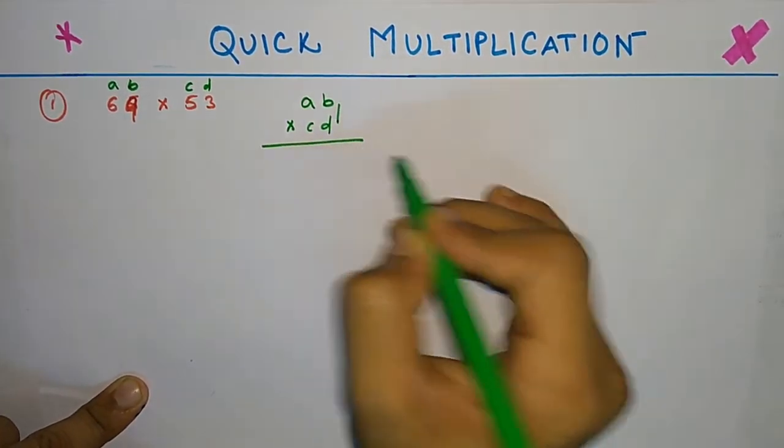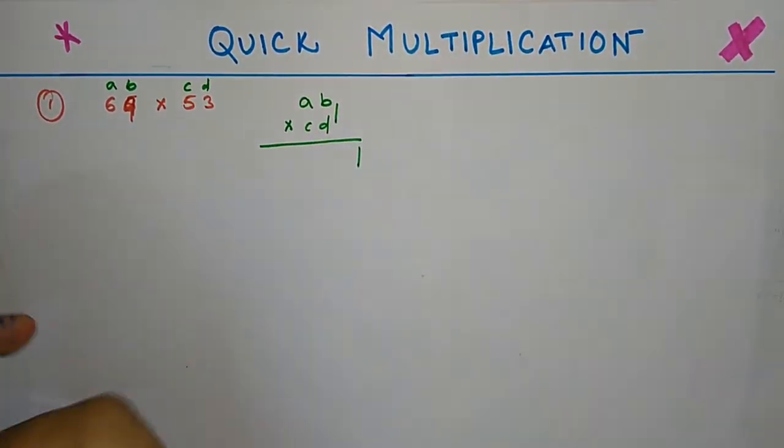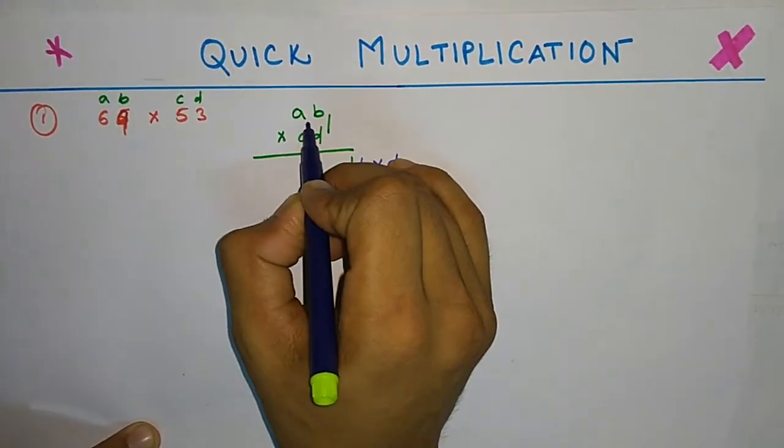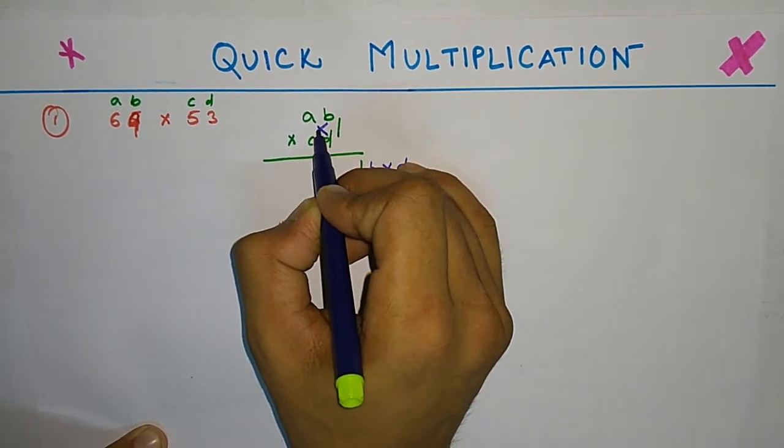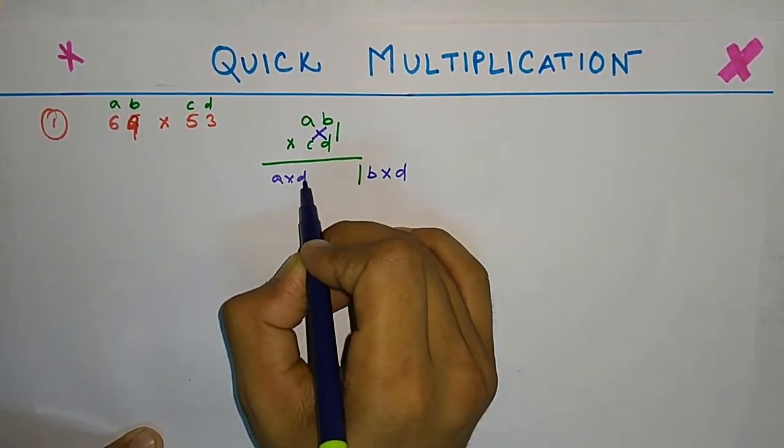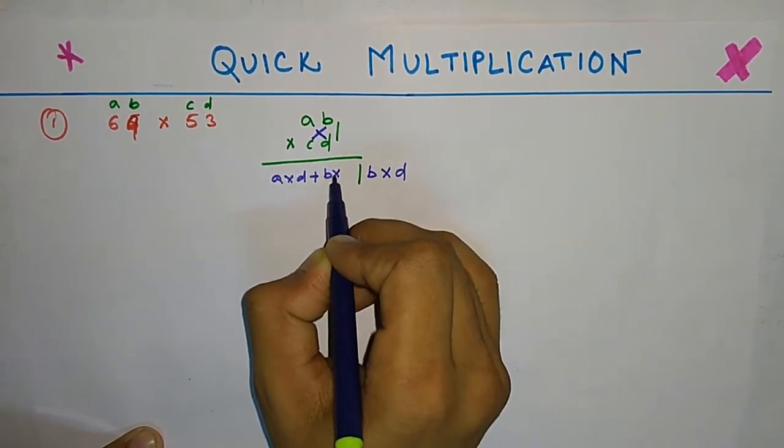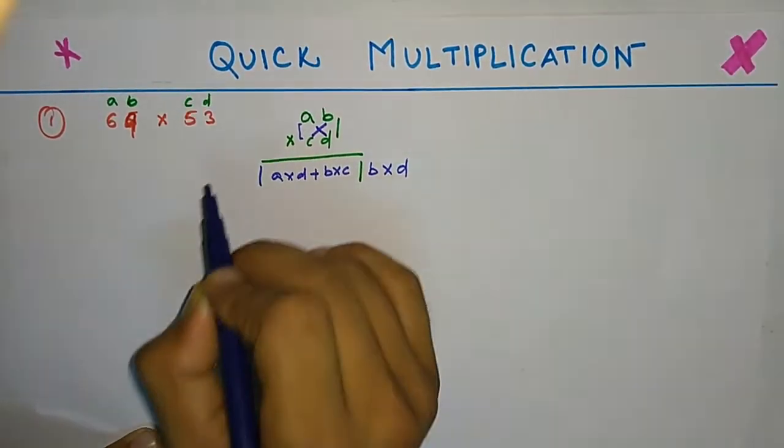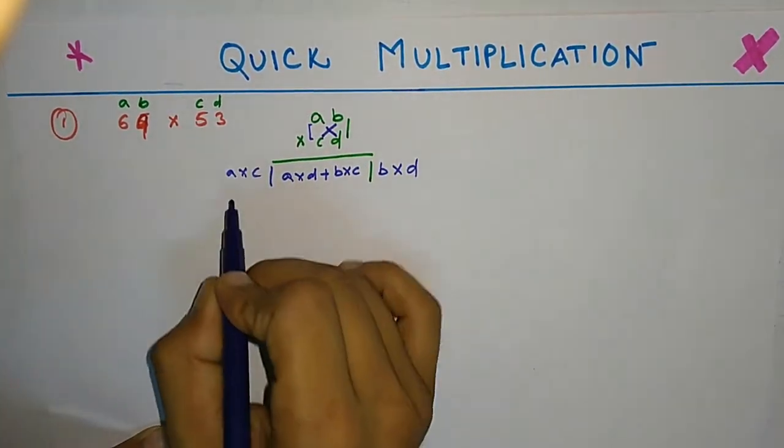You will do multiplication in this manner: the rightmost part will be B cross D. The next one will be cross multiplication and addition. The leftmost part will be multiplication of these two. See, it's very easy.